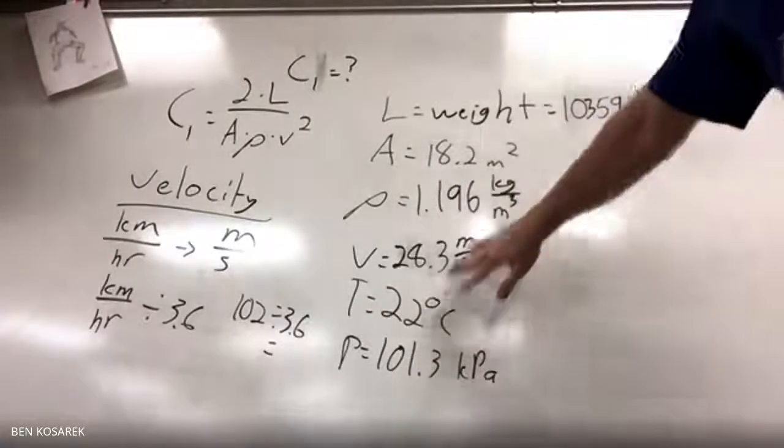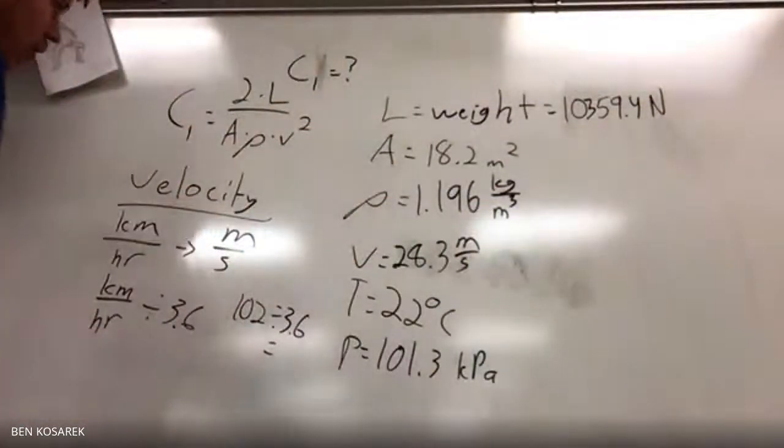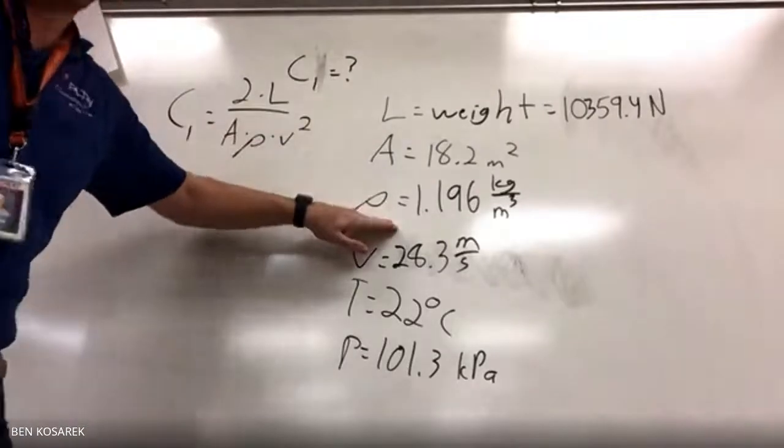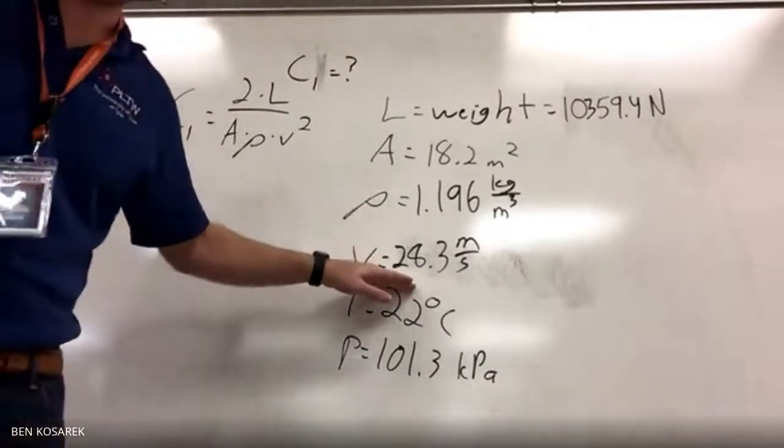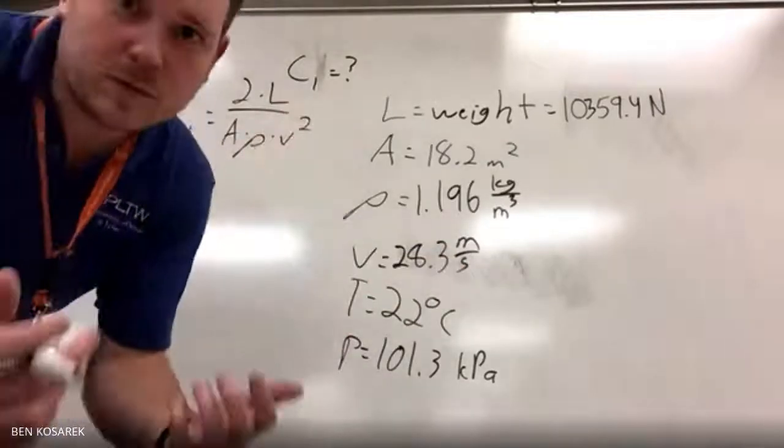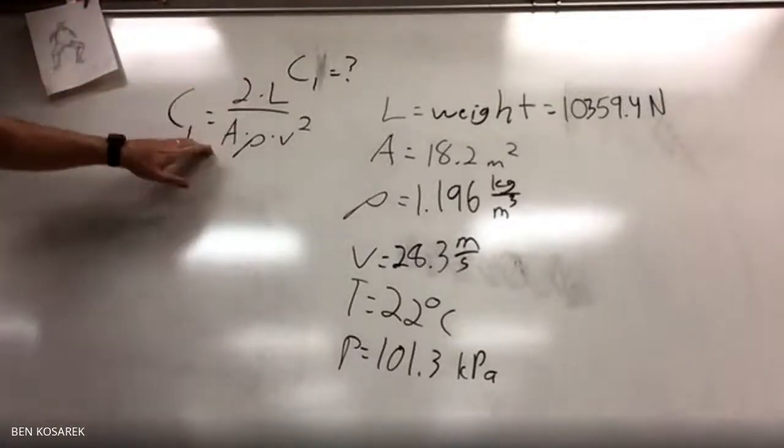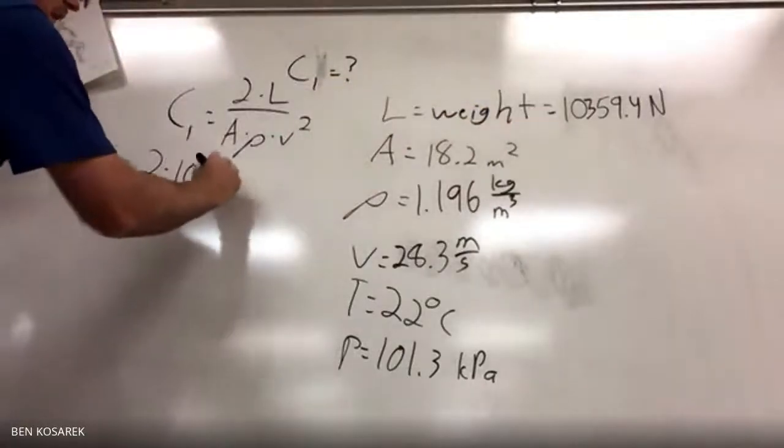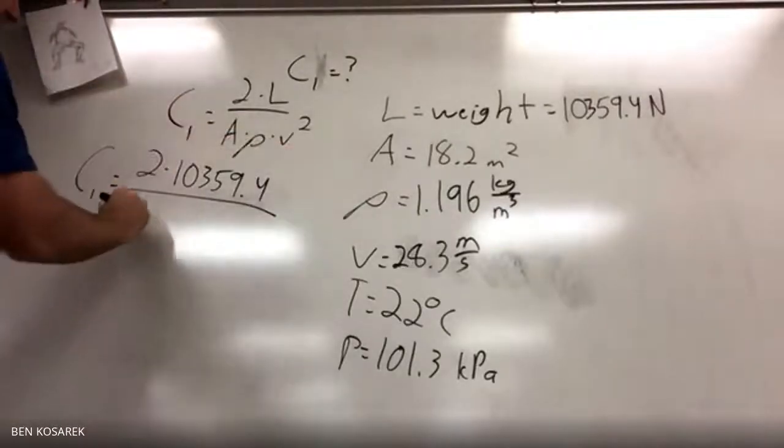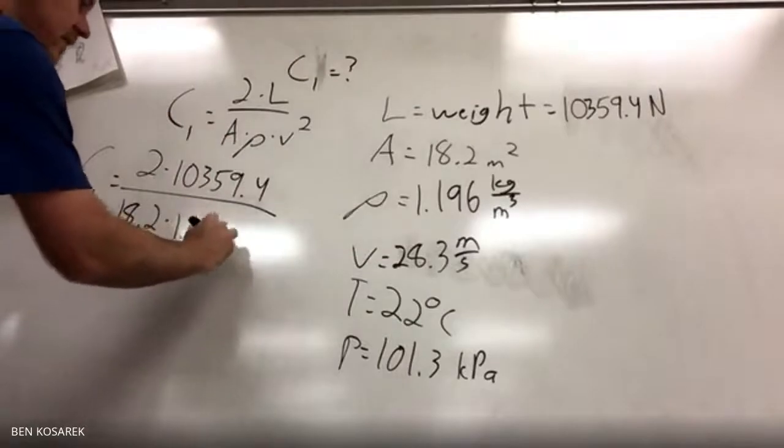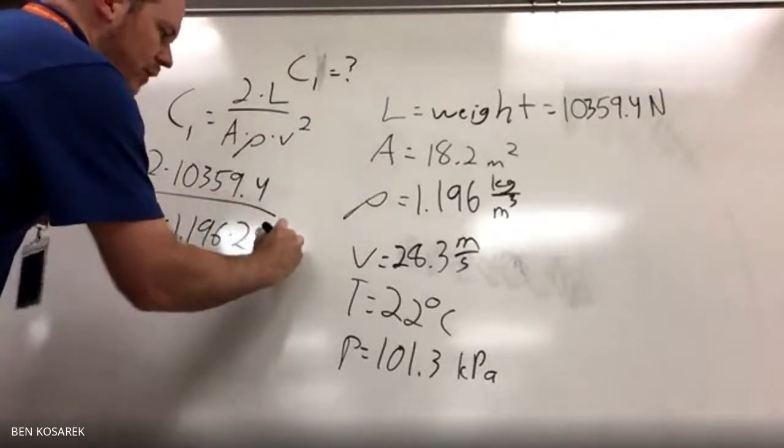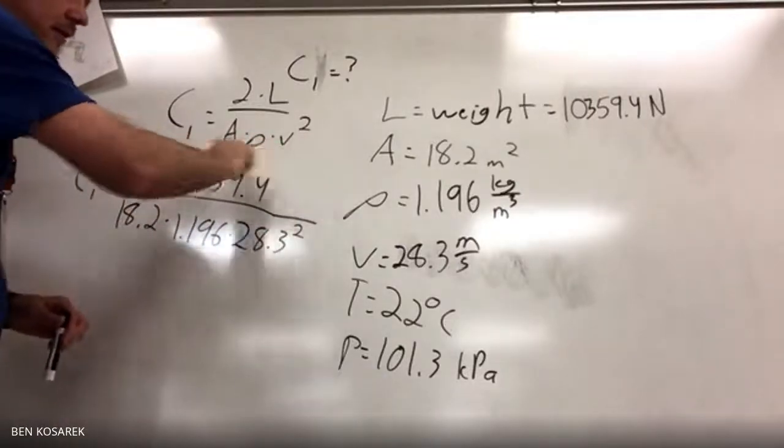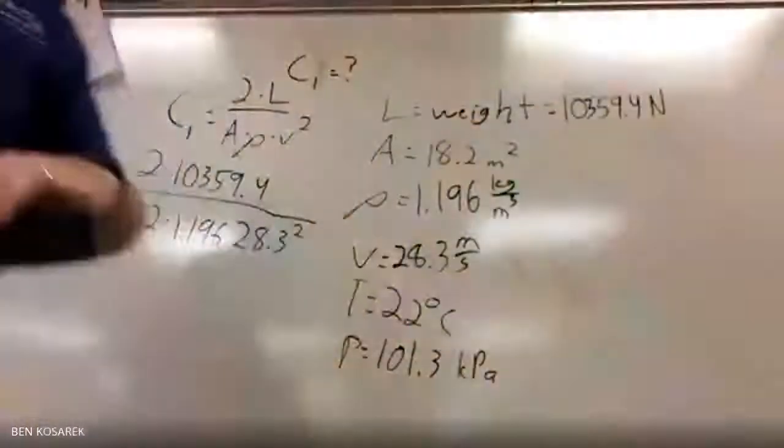Now we can plug everything in and solve. Two times lift (10,359.4) over area (18.2) times density (1.196) times velocity squared (28.3 squared). This squared is just for the v, not for the entire denominator.